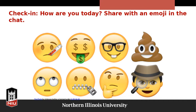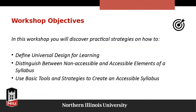That's something fun you can do in an online synchronous session — have students use the emoji feature to do a little check-in at the beginning of class so you can see where everybody's at. I like to start workshops and synchronous class sessions with that. Moving on to our workshop objectives: we're going to discover practical strategies on how to define universal design for learning, distinguish between accessible and non-accessible elements of the syllabus, and learn to use basic tools and strategies to create an accessible syllabus. I'll also give you resources to help you delve deeper.